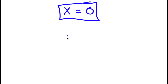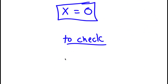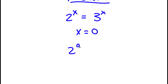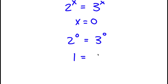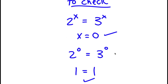Now to check: I have 2 to the power of x is equal to 3 to the power of x, and x is 0. So I have 2 to the power of 0 is equal to 3 to the power of 0. Remember, anything to the power of 0 is simply equal to 1. So 2 to the power of 0 is 1, and 3 to the power of 0 is also 1 — so I have 1 equals 1, meaning my solution is correct. Make sure to hit that thumbs up, like, and subscribe.